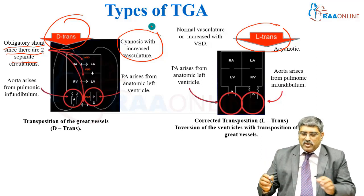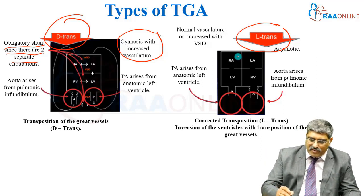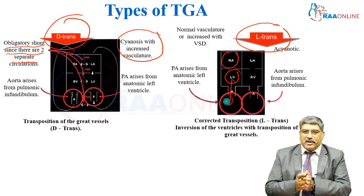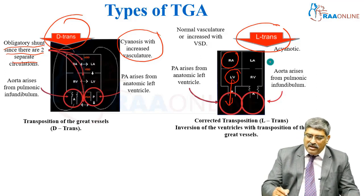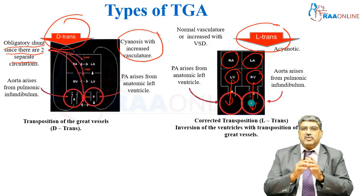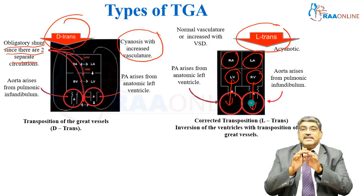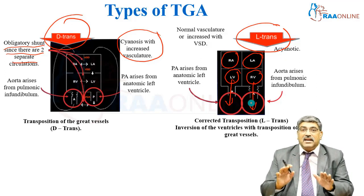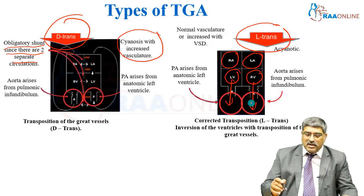In L-transposition, you have the right atrium going to the left ventricle, and the left ventricle gives rise to the pulmonary artery. Then the pulmonary vein goes into the left atrium, then the right ventricle, and the right ventricle gives rise to the aorta. This is basically congenitally corrected transposition.